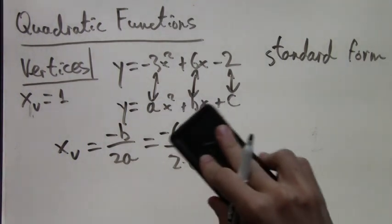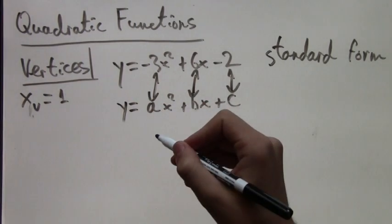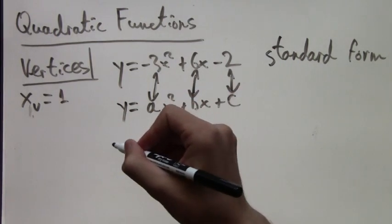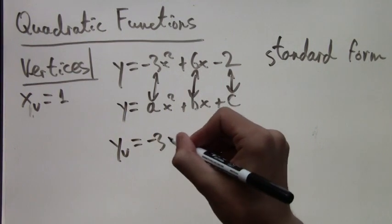So now that we have the x-coordinate, how do we find the y-coordinate? Well, it's actually really convenient. We're already given our formula: y equals negative 3x squared plus 6x minus 2.